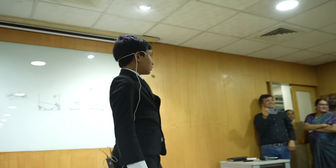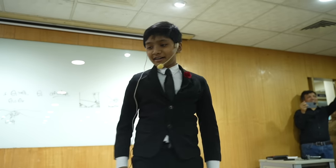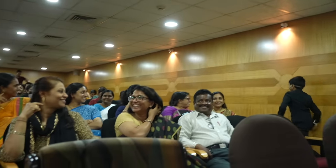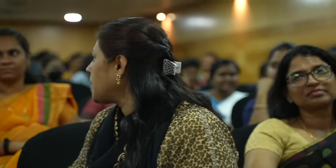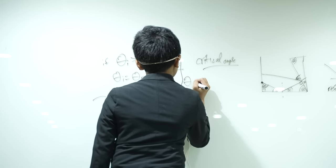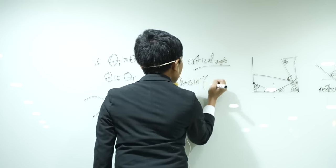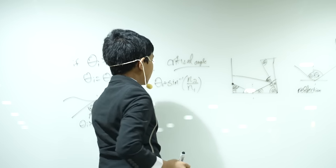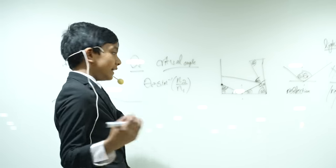Someone raised their hand — I'll come over since I can't hear from the back. The refractive index equals one over sine-c, where c is the critical angle. It does have something to do with the index of refraction. Theta-c is equal to the inverse sine of N2 over N1 — the index of refraction of the second medium over the index of refraction of the first medium.